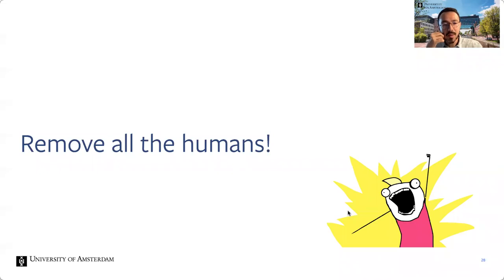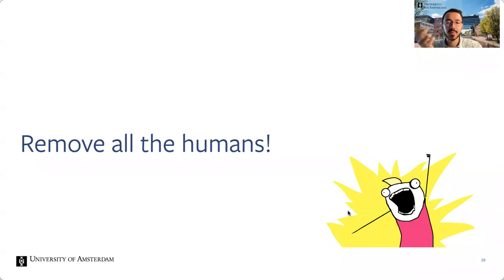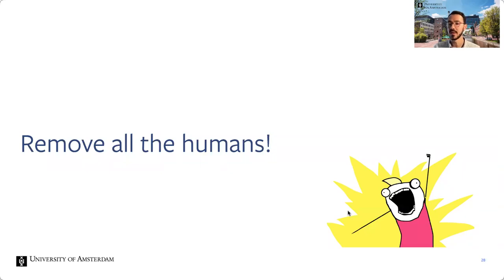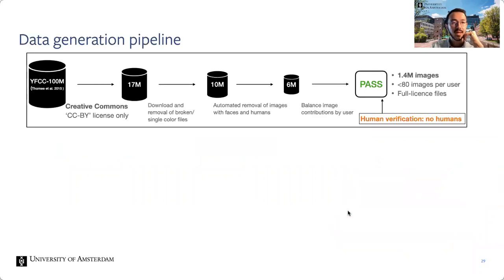You might wonder: why do we think we can just remove humans? Remember, we're doing self-supervised visual representation pre-training. For learning generic features, having various objects and augmentations is important and enough. Even in ImageNet, people just appear somewhere in the background — they're not the main subject. And if we have a downstream task involving humans, we can just fine-tune the network. Spoiler: we show this is exactly the case, even on downstream tasks involving humans.